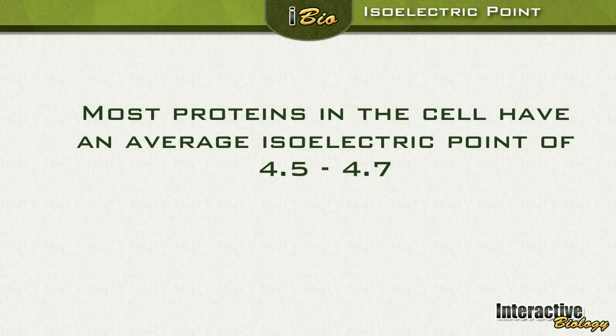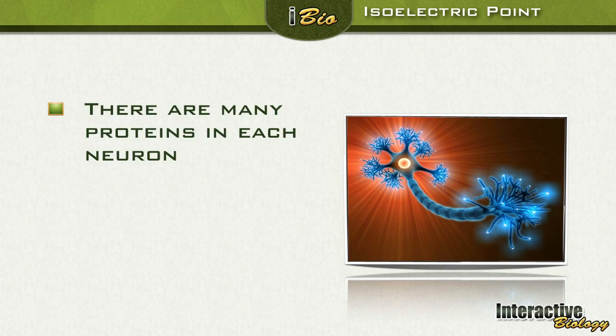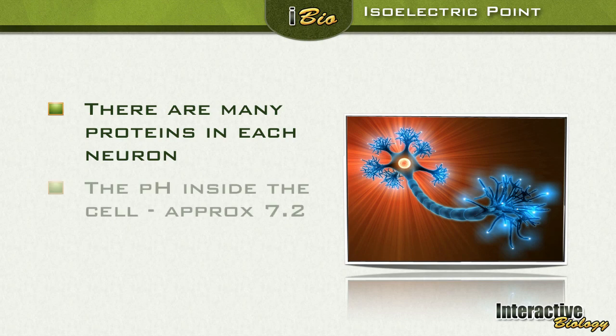Most proteins in the cell have an average isoelectric point of between 4.5 and 4.7. Please remember those numbers and let's continue. There are many proteins in each cell, and of course since neurons are cells, there are going to be many proteins in the neurons.